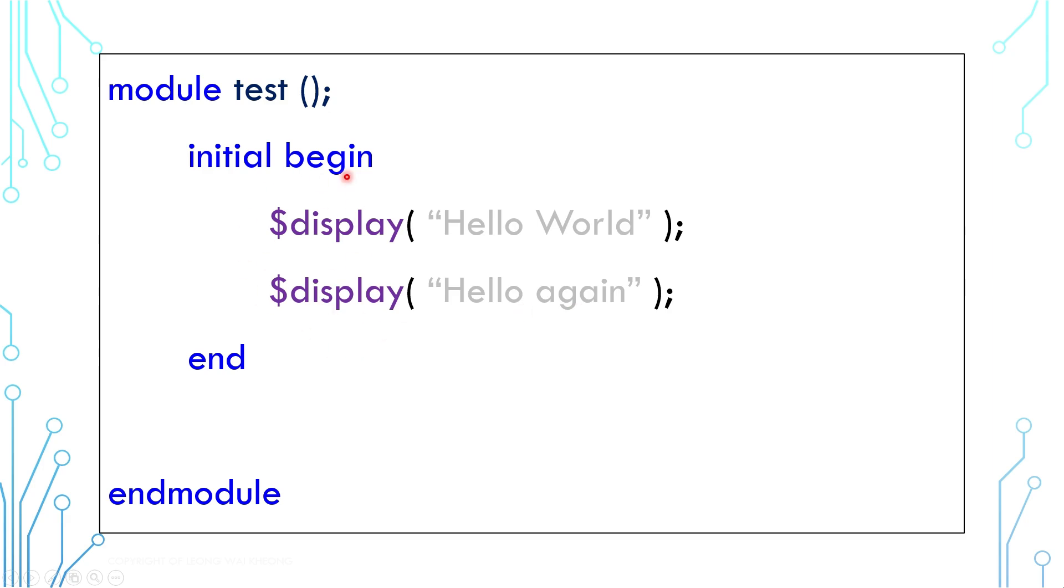However, in simulation time, that still happens at time zero. You can introduce simulation time delay by using hashtag followed by a time notation. In this example, Hello World is printed at time zero, and then Hello Again is printed one nanosecond later.